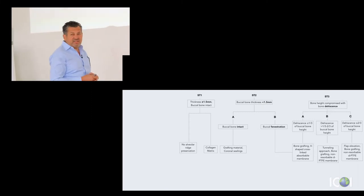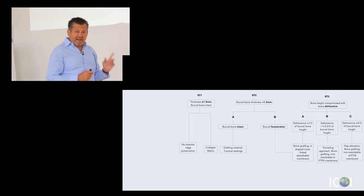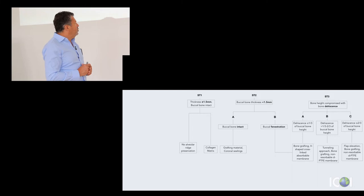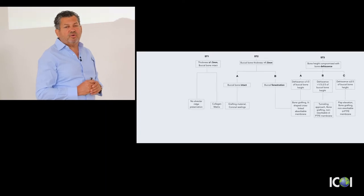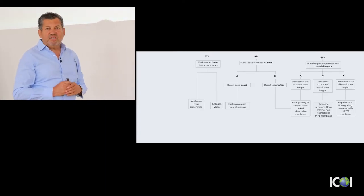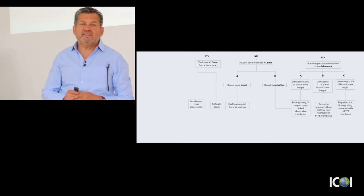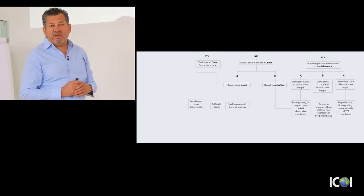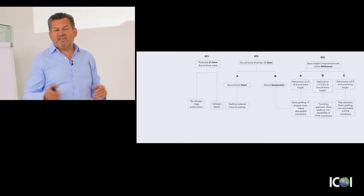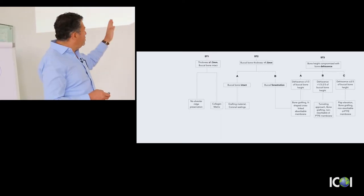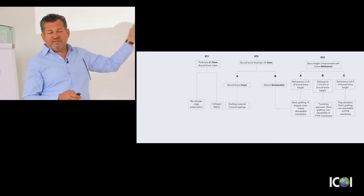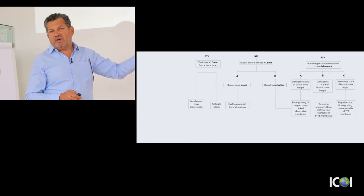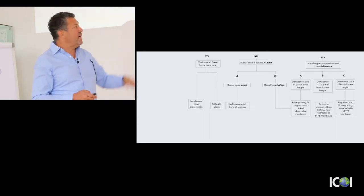When the whole buccal plate is missing and we want to use a PTFE membrane without seeking primary closure, this is the only time we do a flap elevation — slightly on the palatal side and more on the buccal side — to be able to fix the membrane if necessary and position it ideally. In this way, according to our classification, we guide our treatment.